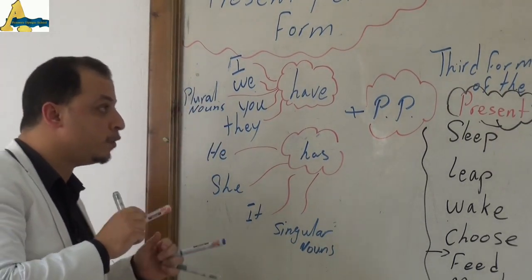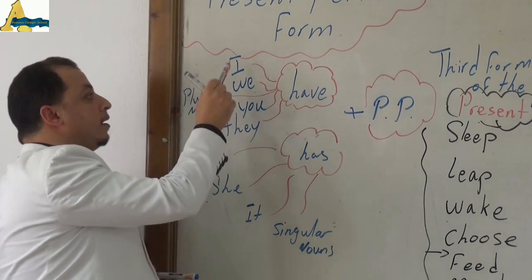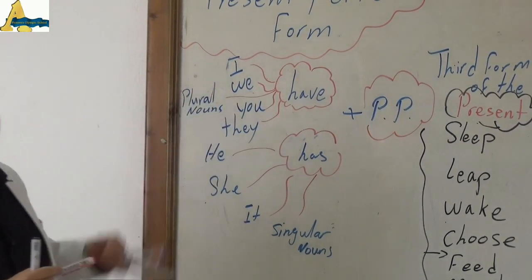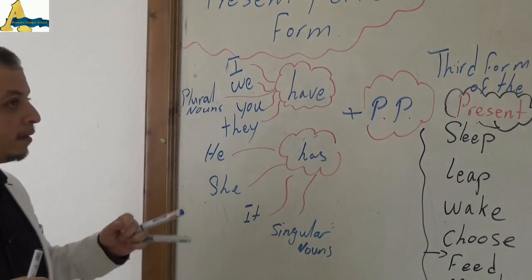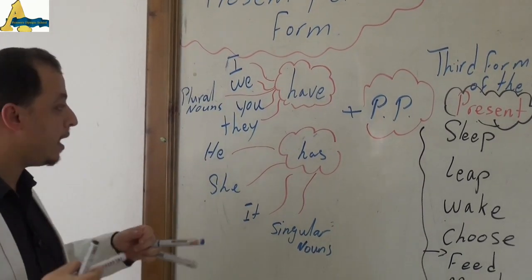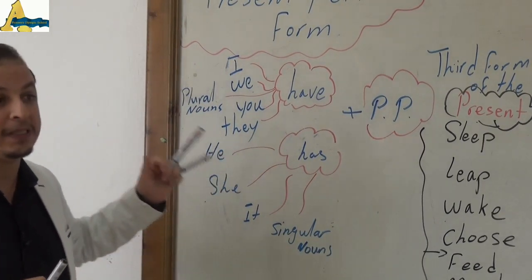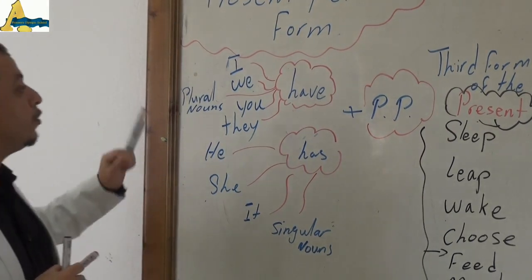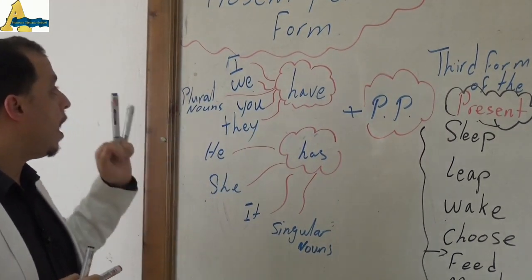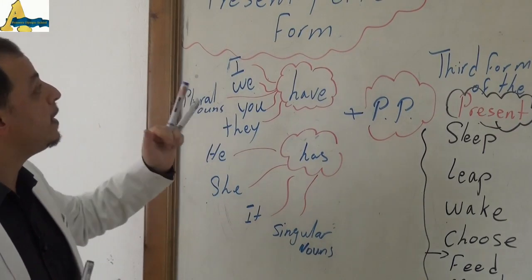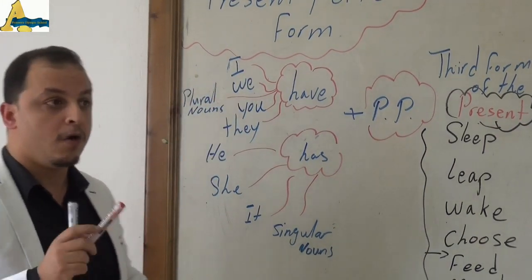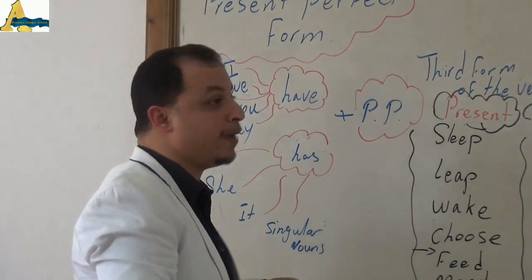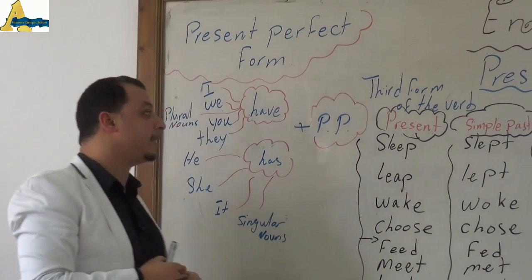Everything used with 'have': I, we, you, they, and plural nouns. Then 'has' — we use 'has' in the present simple with he, she, it, and singular nouns. Do not forget that these two are going to be important in the present perfect form. This is known from the present simple — we have taken them before in the present simple.